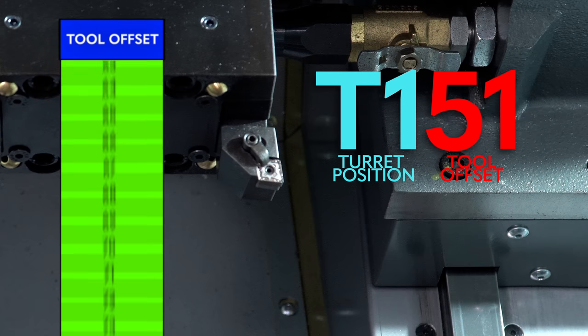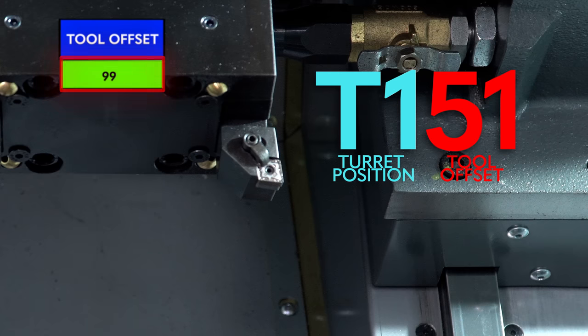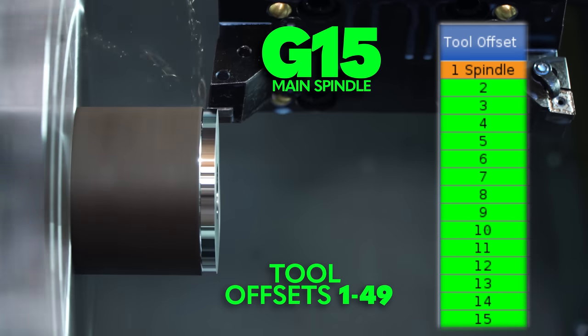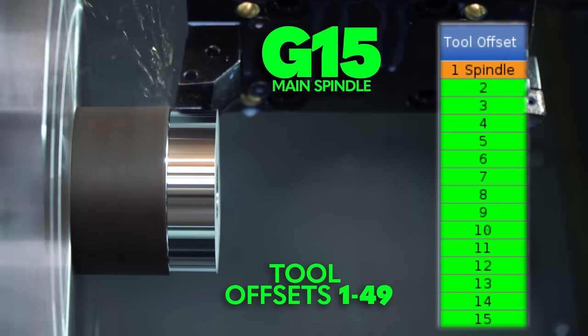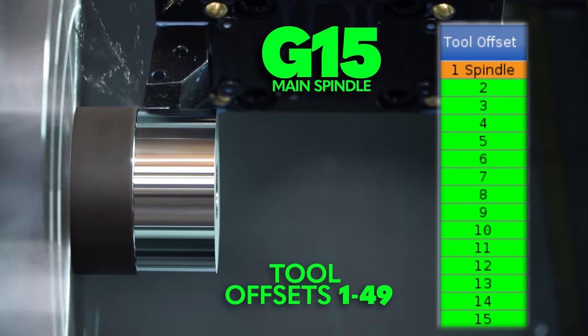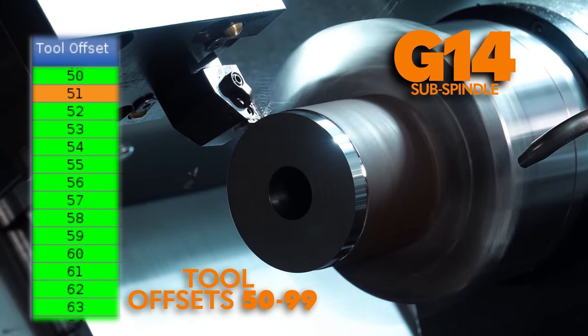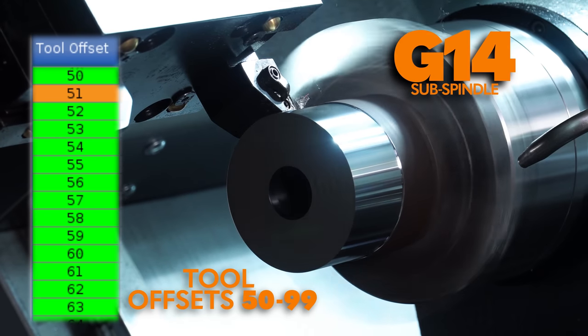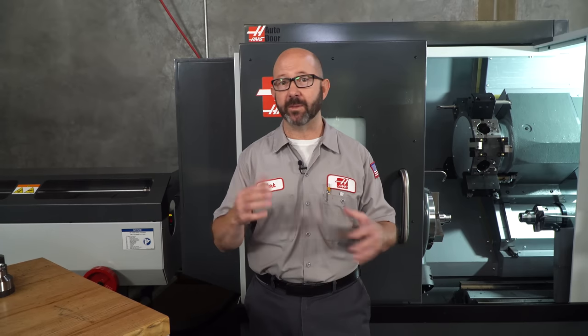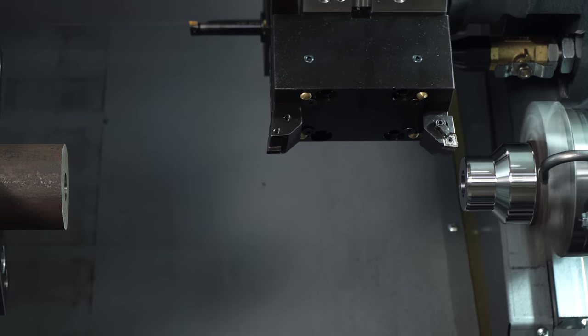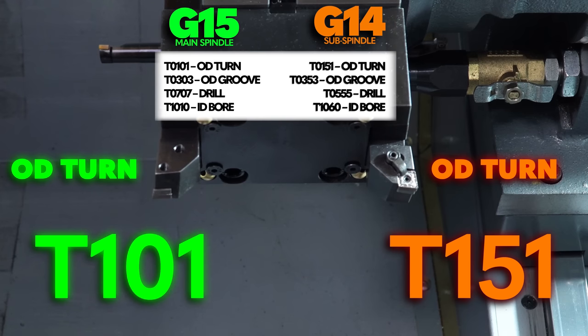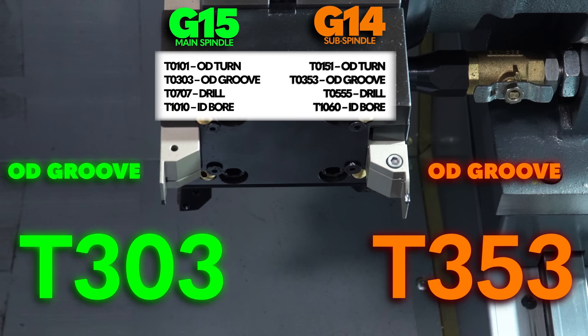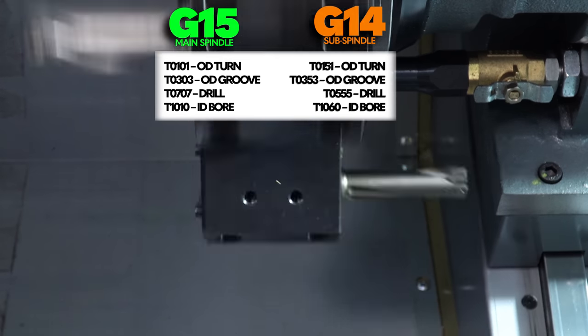Now we've got 99 available lathe tool offsets that we could use. And we've decided that for our main spindle, all of our G15 work, all of our tool offsets are going to match our turret position numbers. But for our G14 tools, all of our sub-facing tools, we're going to use tool offset values 50 higher than our turret position numbers. Now, why is this? No particular reason at all. We just had to make sure that we were using unique tool offset values and this is the system that we came up with. Let us know in the comments what system you use.